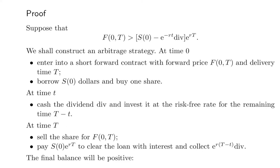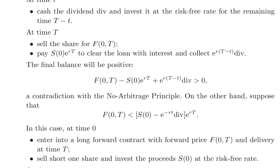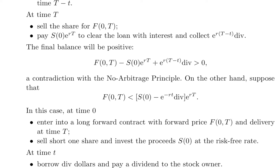The final balance will be positive: F(0,T) − S0 · e^(rT) + e^(r(T−t)) · div > 0. This is a contradiction with the arbitrage principle.